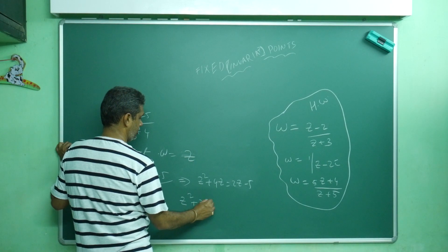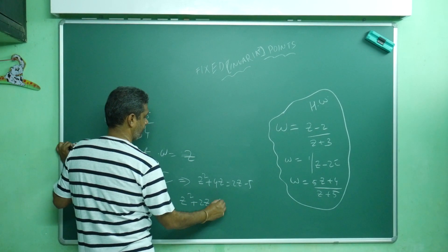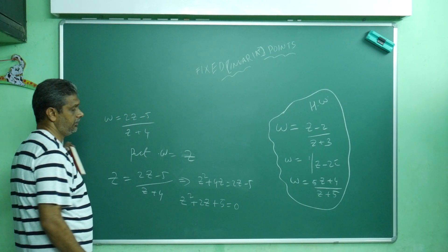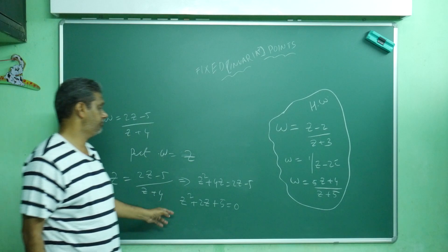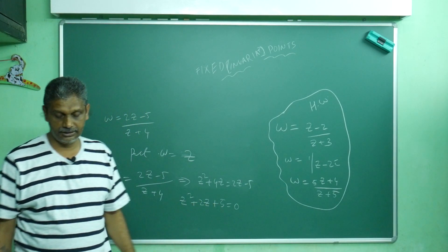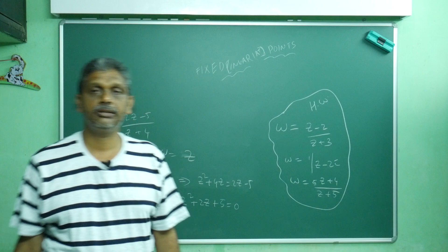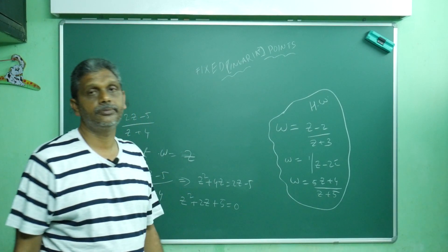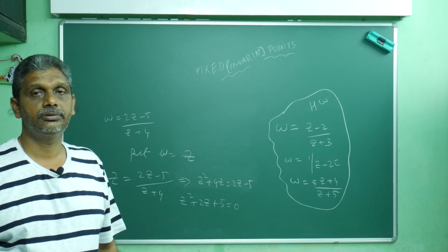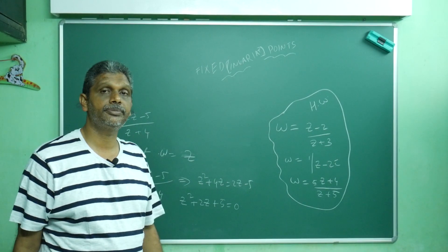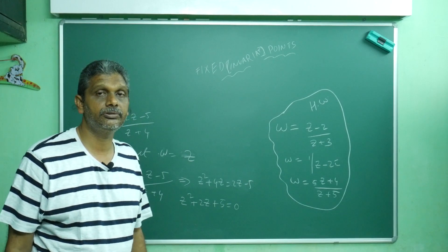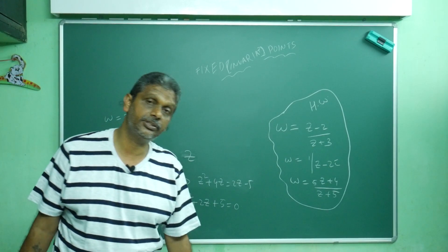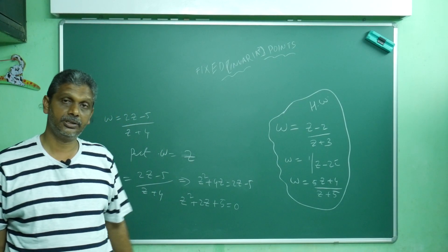Can you factor it directly? No, we cannot. So I will use the quadratic formula. If you have a quadratic equation ax squared plus bx plus c equals 0, we solve using minus b plus or minus square root of b squared minus 4ac divided by 2a. b squared minus 4ac is the discriminant.